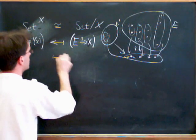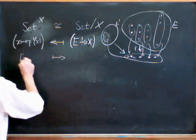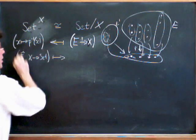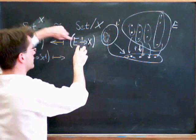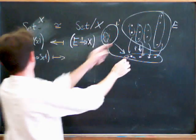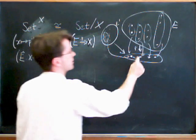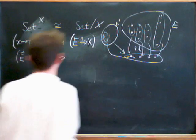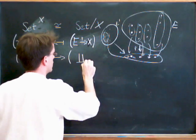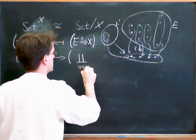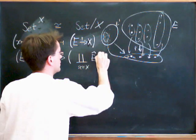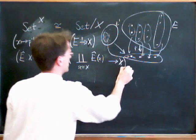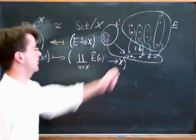And to go the other way, what do we do? Well if we've got E hat going from X to sets, we need some set together with a map to X. So this functor here just associates to each element of X a fibre, so we just take the disjoint union of all the fibres. So this just maps to the disjoint union over x in X of E hat of x. So each of the fibres, and that comes with a map to X automatically.